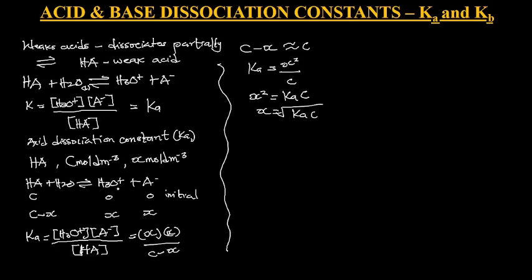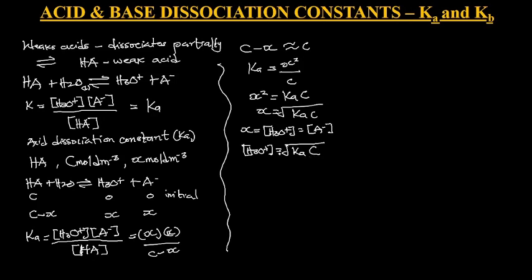X represents the concentration of both H3O+ and A-. So X equals the concentration of H3O+, which also equals the concentration of A-. Therefore, the H3O+ concentration equals the square root of KA times the acid concentration C. Let's call this equation 1.